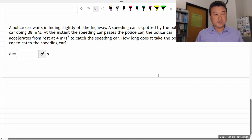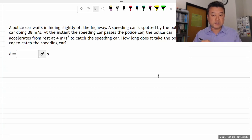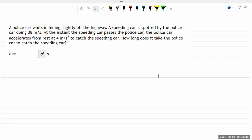So it says a police car waits in a speed trap. A speeding car is spotted by the police car doing okay. And I don't have any sense for meters per second, so I don't know how fast that is.